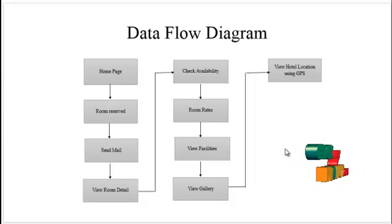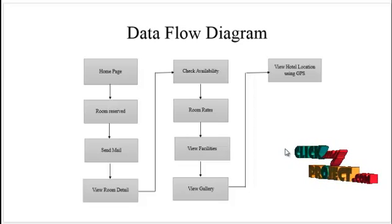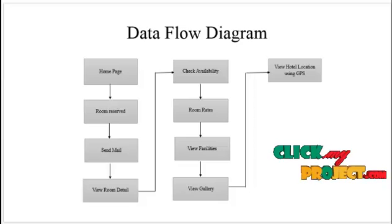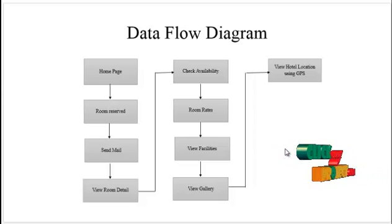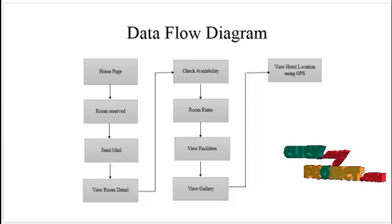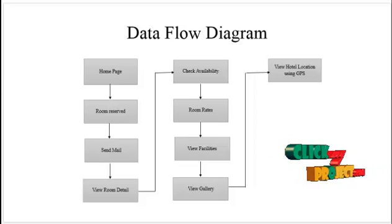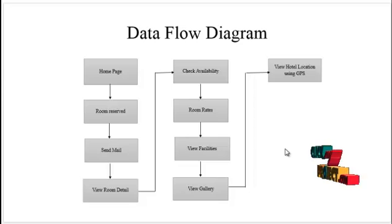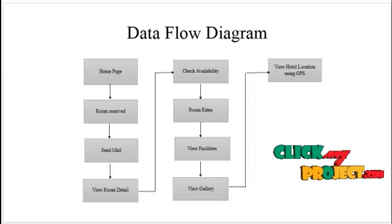Now I am going to explain the data flow diagram. In this application, first of all we click the app, which contains the home page. Before reservation, the user should check the availability of the room and view the room details and room rates of the particular rooms.